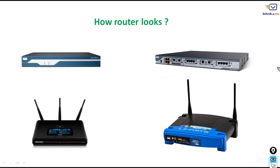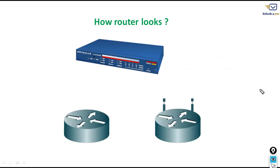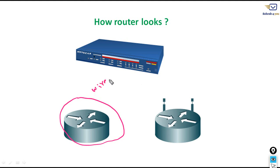How does a router look? Mostly a router looks like this — this is the front, this is the back side. Some routers look like this. You can also see the symbols: for a wireless router this is the symbol, and for a wired router this is the symbol — a circle with four arrows. This is the icon of the router. Now you understand how a router looks — it's just a physical device.